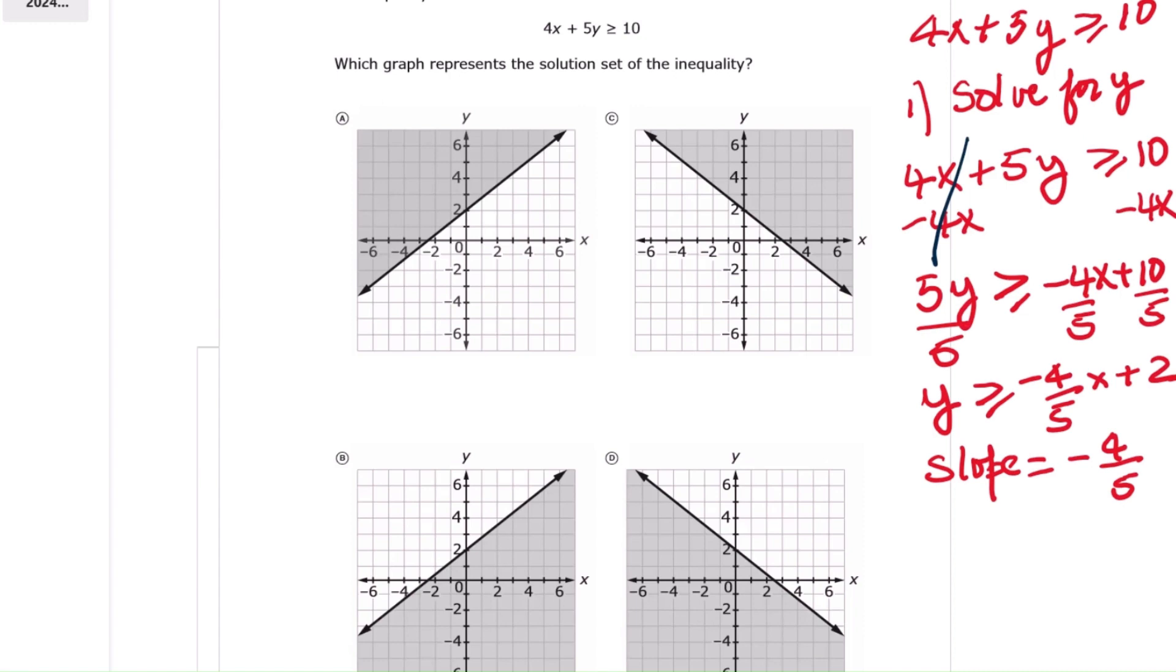Notice the slope is negative, so we can eliminate answers A and B right away. That leaves C and D. When graphing inequalities, remember this rule: If it is just greater than or less than, we use a dashed line. If it is greater than or equal to or less than or equal to, we use a solid line. Here it is greater than or equal to, so we use a solid line. And since it is greater, we shade above the line. Therefore, the correct answer is C.